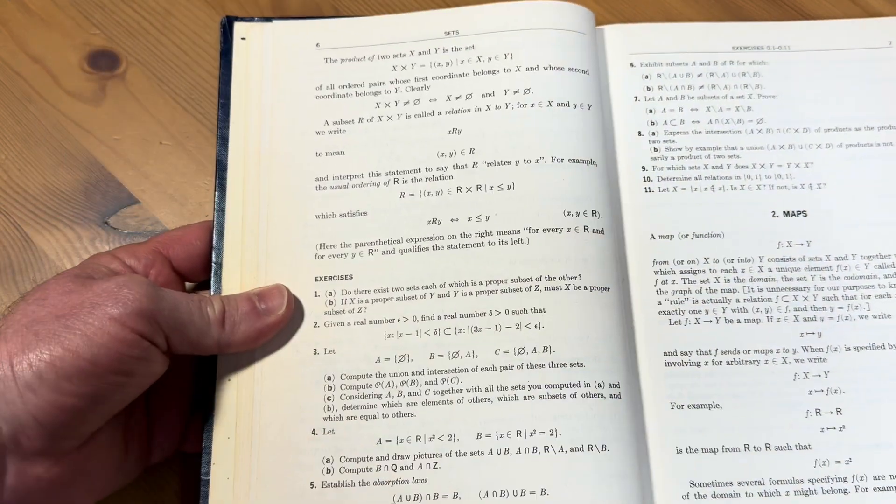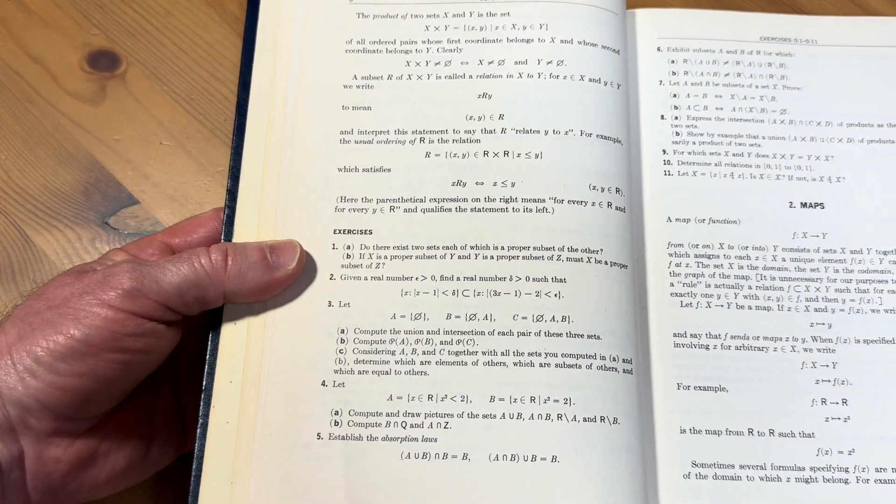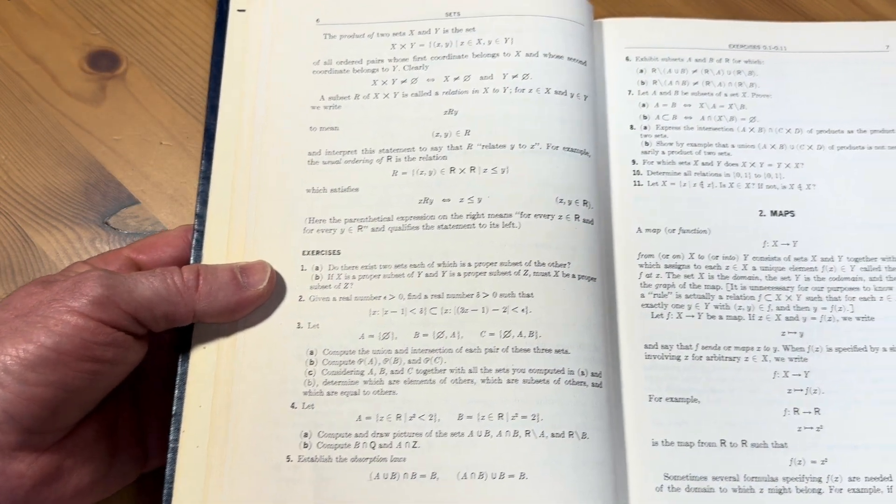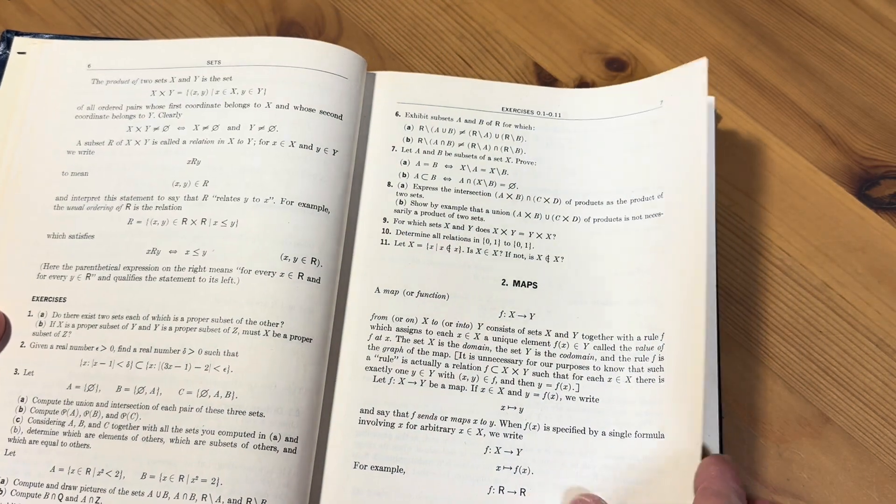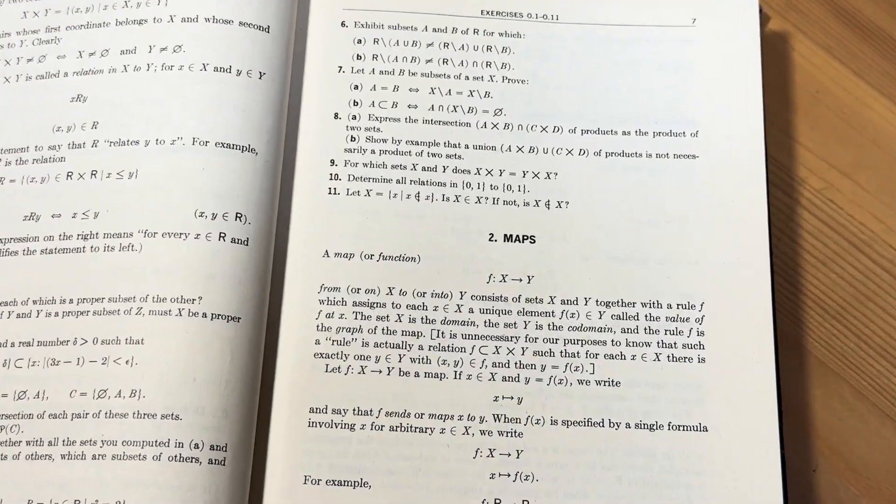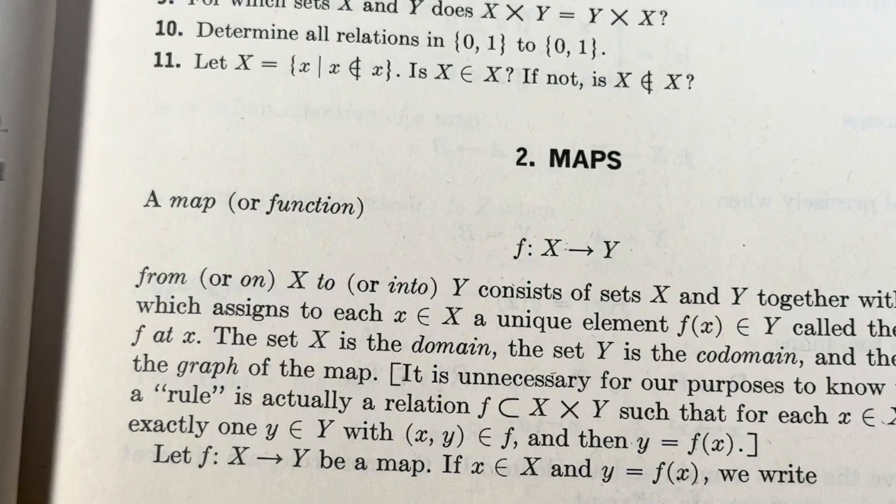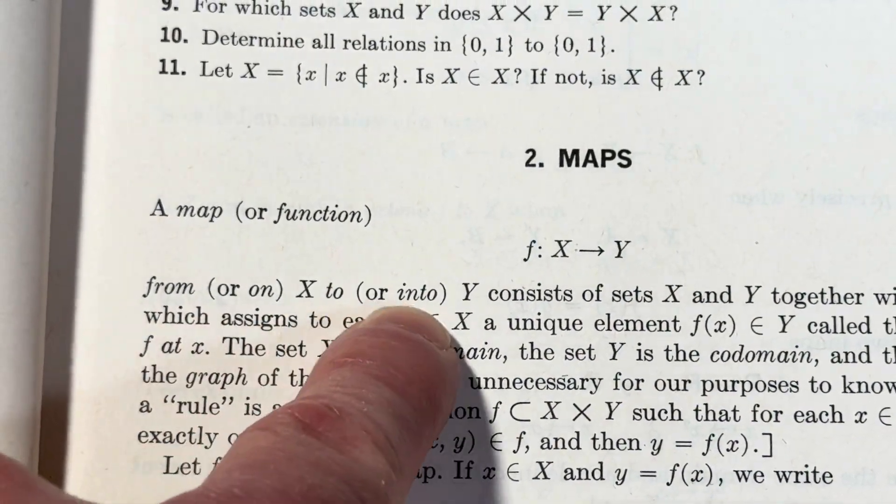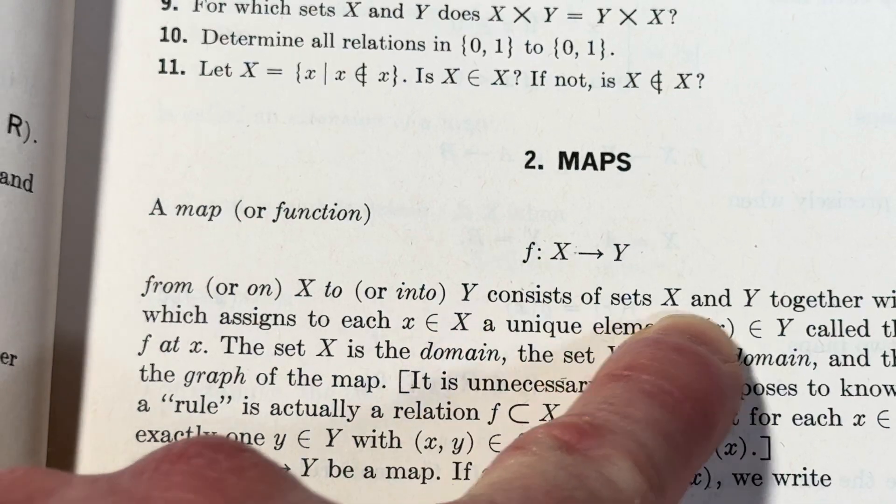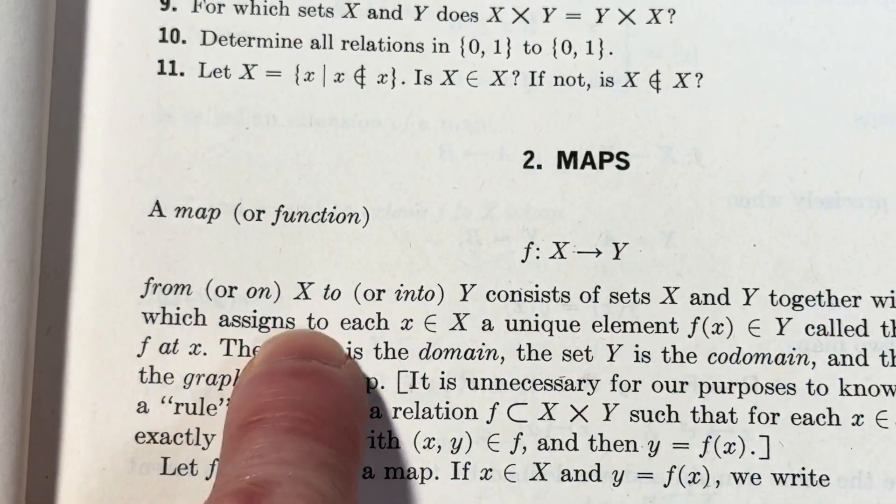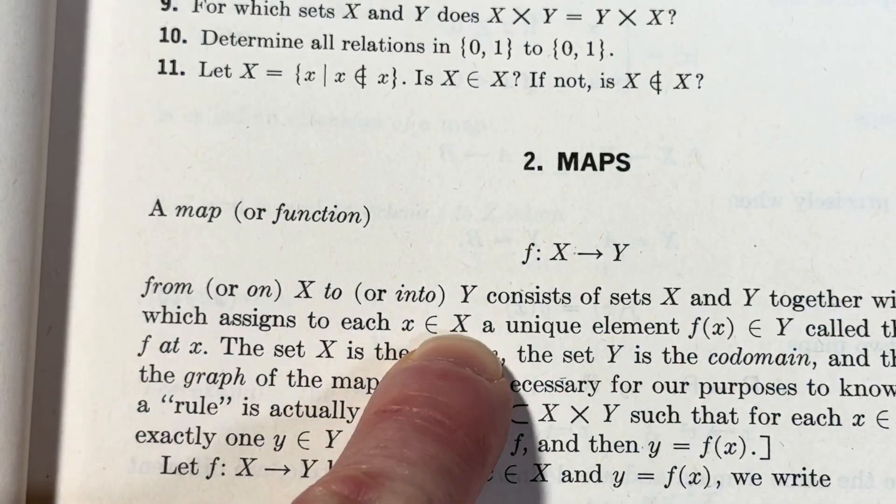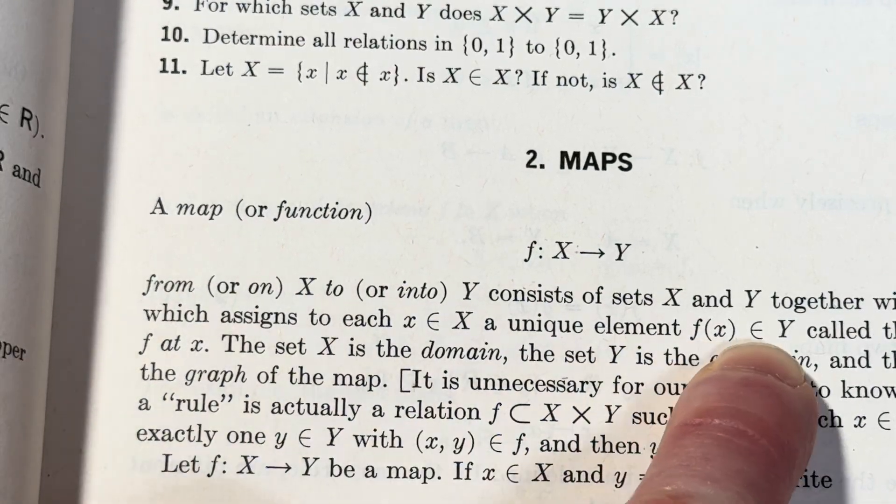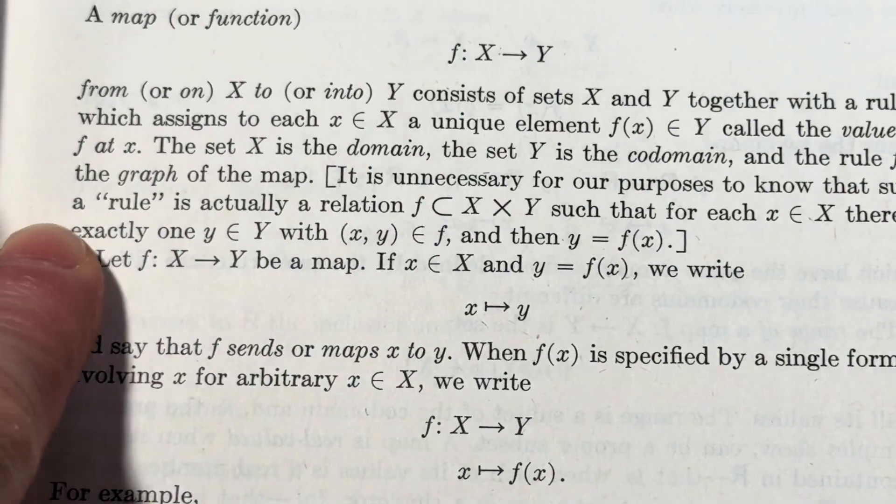Maps. We've got some exercises here. That's kind of fun. Cool. And then we've got some maps. Here it defines a mapping. Let's look at this. A map or function f from x into y, f from or on x to or into y, consists of sets x and y together with the rule f, which assigns to each little x and big x a unique element which we denote by f of x and y called the value of f at x.